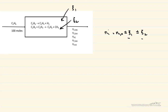Let's write it out for all five components, starting with ethane. The moles of ethane out equals 100 (moles in), minus ξ₁ (it's a reactant in reaction 1 with stoichiometric coefficient of 1), minus ξ₂. For the remaining components, there are no moles coming in, so that inlet term is zero for all of them.